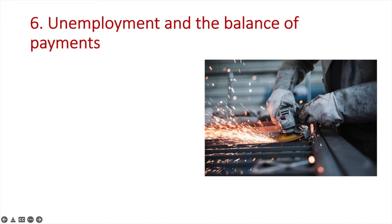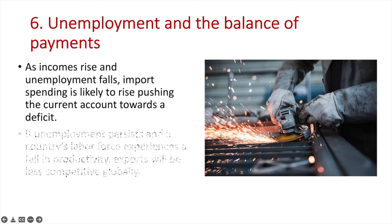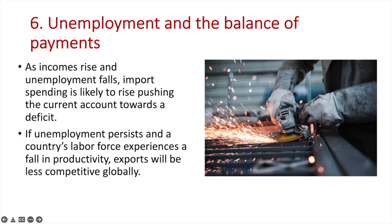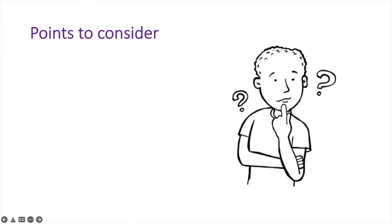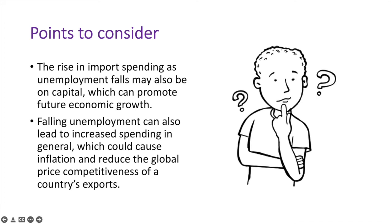Sixth is the relationship between unemployment and the balance of payments. As incomes rise and unemployment falls, import spending is likely to rise, pushing the current account towards a deficit. If unemployment persists and a country's labour force experiences a fall in productivity, exports will become less competitive globally. Also consider that the rise in import spending as unemployment falls may also be on capital, which can promote future economic growth. Falling unemployment can also lead to increased spending in general, which could eventually cause inflation and reduce the global price competitiveness of a country's exports.